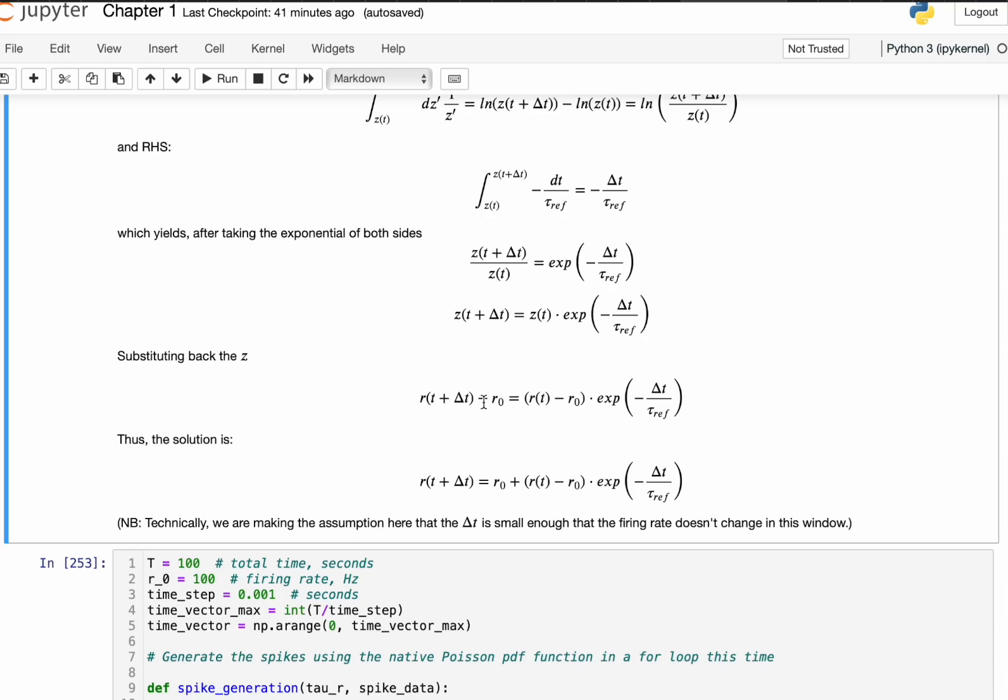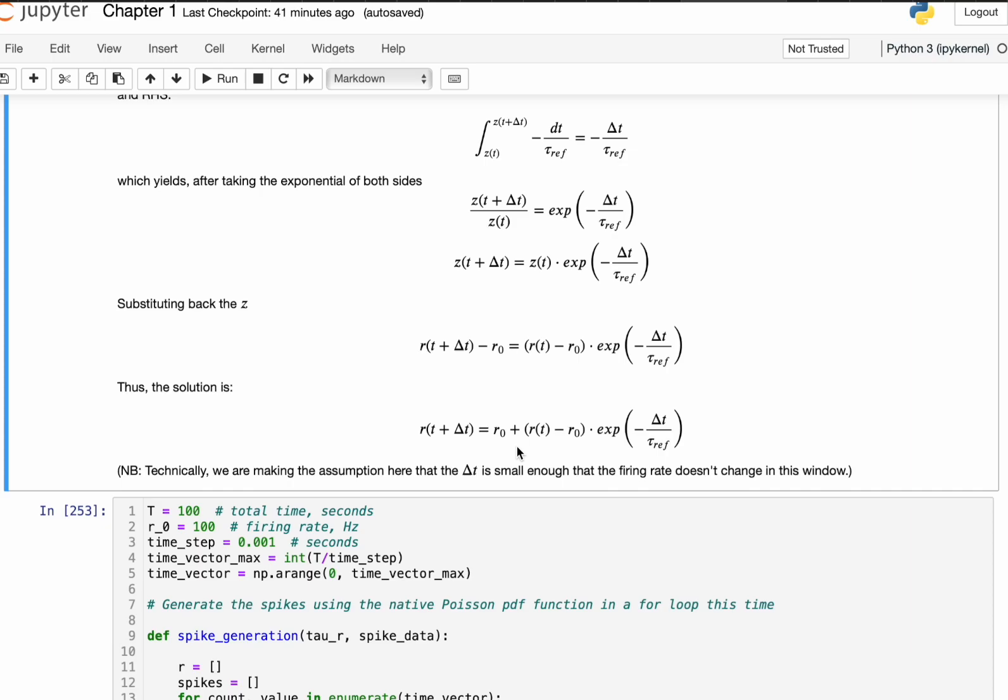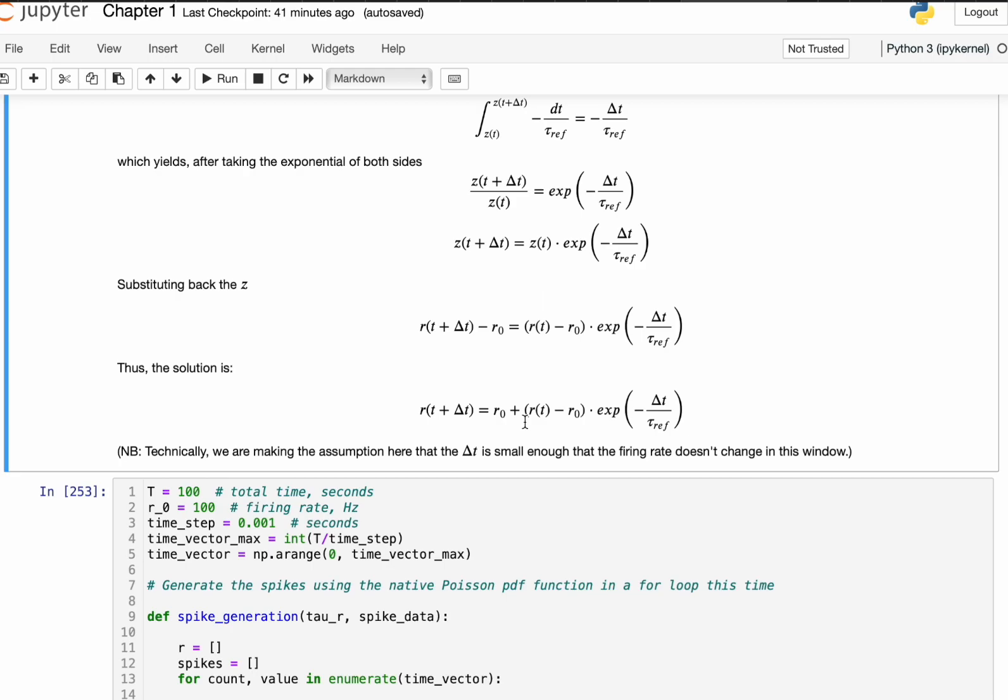But obviously, you want to solve for the R of t plus delta t, so you move the R steady state onto the right-hand side of the equation, and this is what it looks like. So, this is quite a common solution to all of these ordinary differential equations, wherein we have this exponential relaxation term, wherein the firing rate gradually increases from zero to that steady state value.